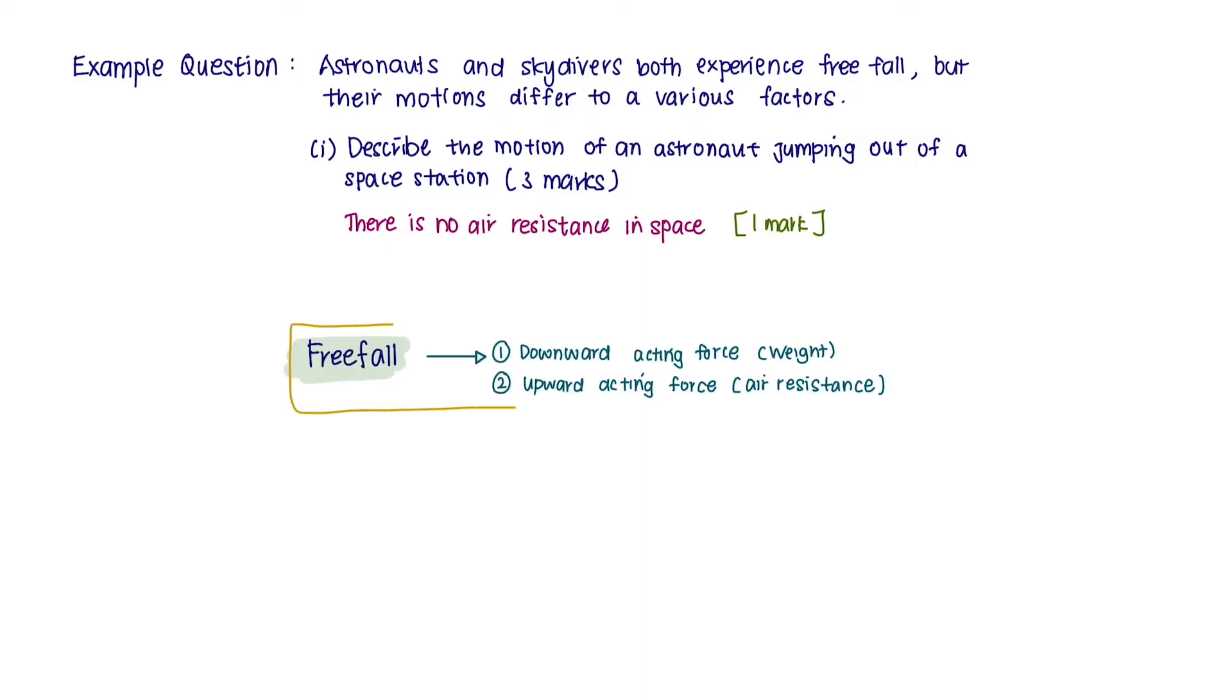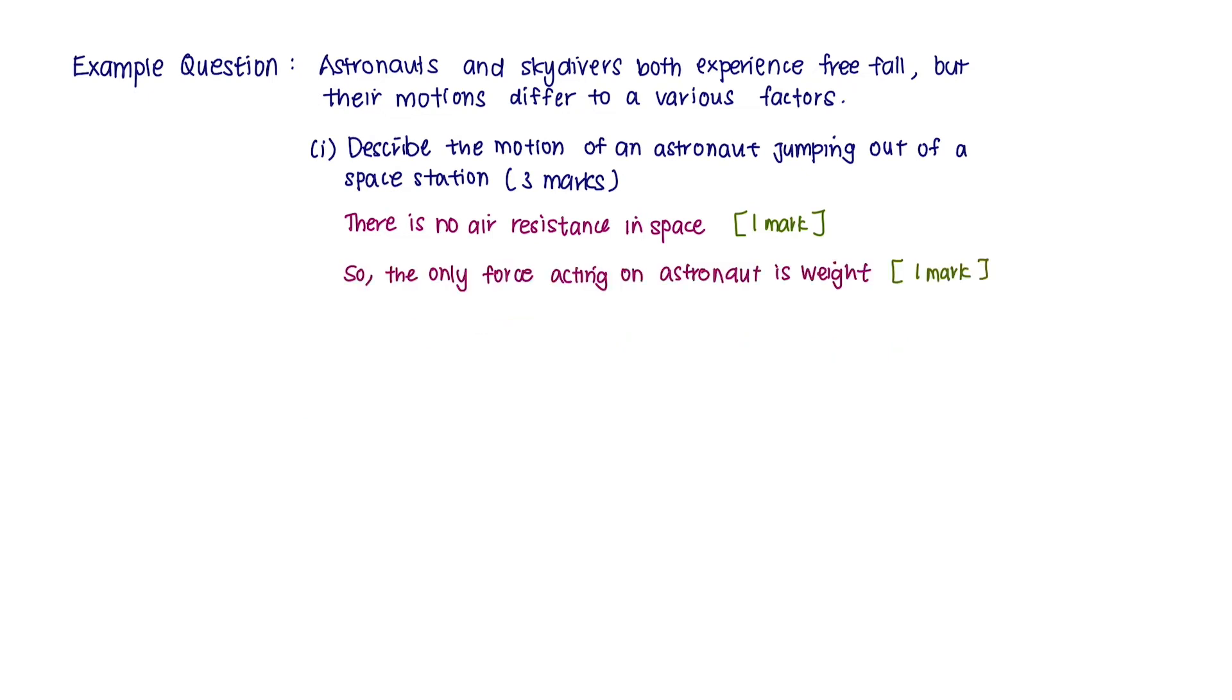During freefall, there are two types of forces. Since there is no air resistance, the only force acting on the astronaut is the weight. Hence, the astronaut will fall with an increasing speed.